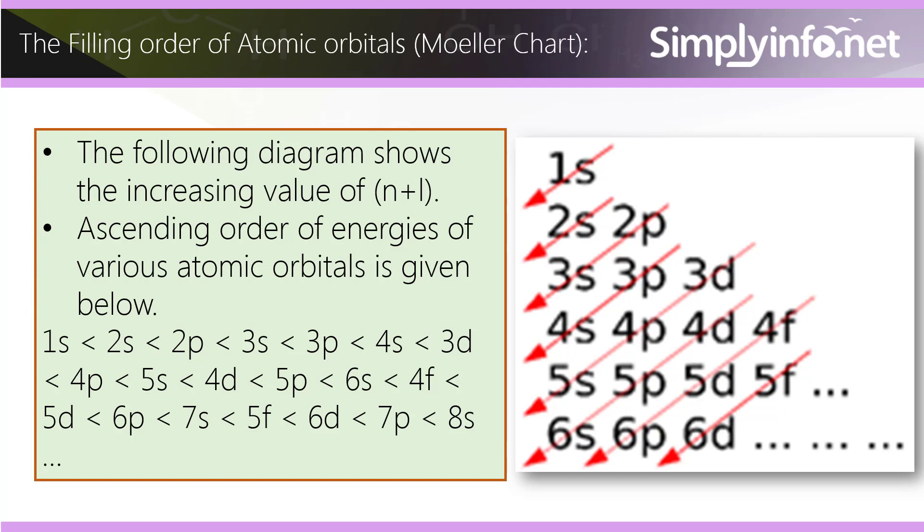The filling order of atomic orbitals: Moller chart. The following diagram shows the increasing value of n+l. Ascending order of energies of various atomic orbitals is given below: 1s < 2s < 2p < 3s < 3p < 4s < 3d < 4p < 5s < 4d < 5p < 6s < 4f < 5d < 6p < 7s < 5f < 6d < 7p < 8s, and so on.